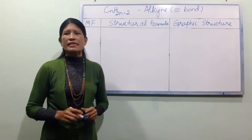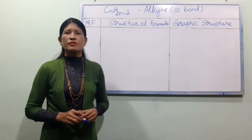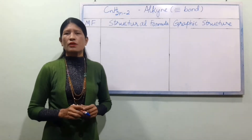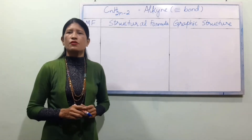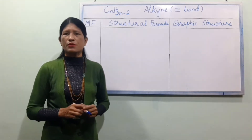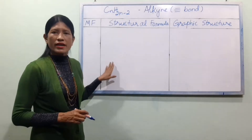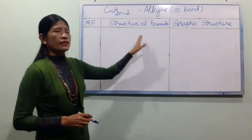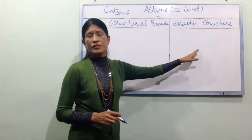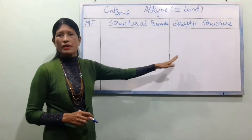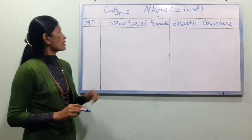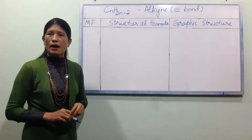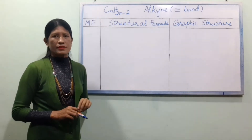LK — molecular formula, structural formula, graphene formula. The molecular formula uses the general formula CnH2n-2.